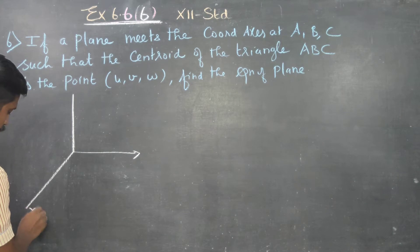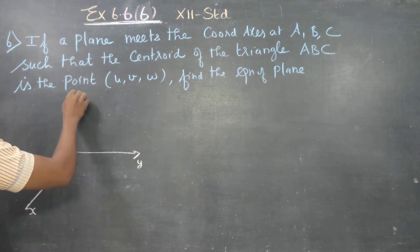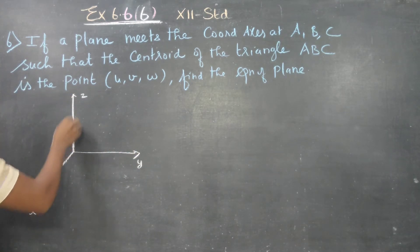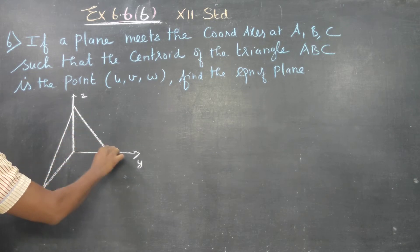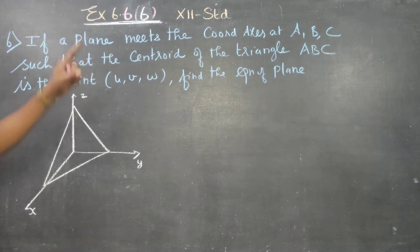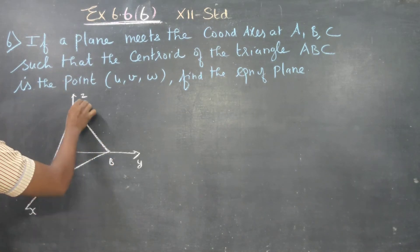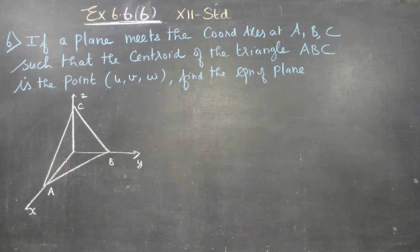Consider the coordinate system with the X, Y, Z axes. The plane meets the coordinate axes at A, B, and C such that the centroid of this triangle is G.